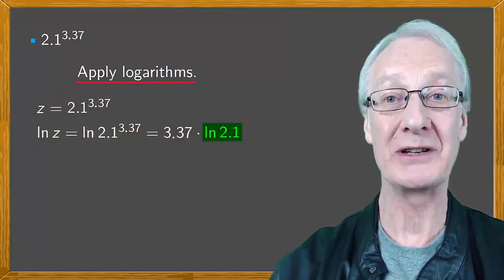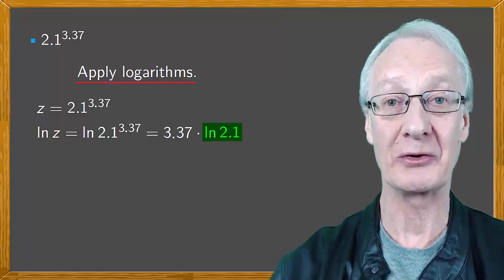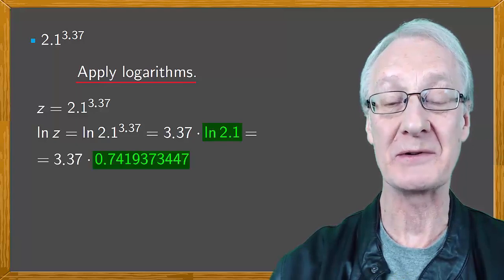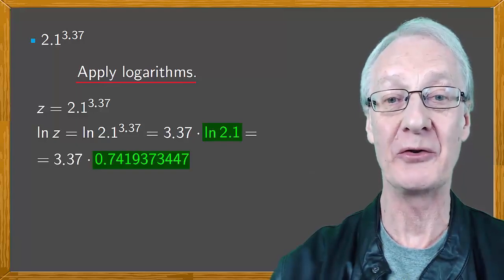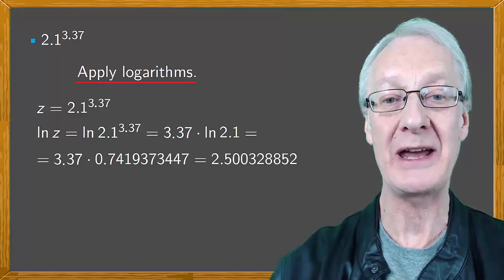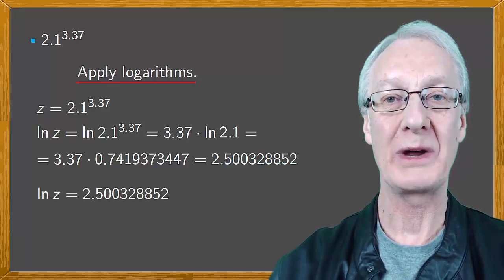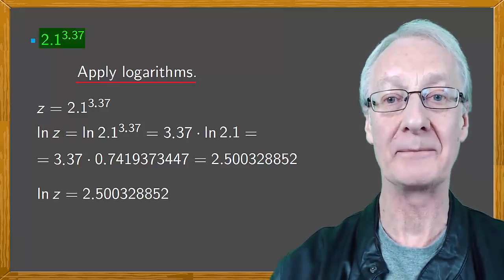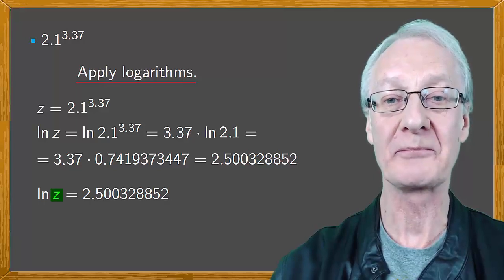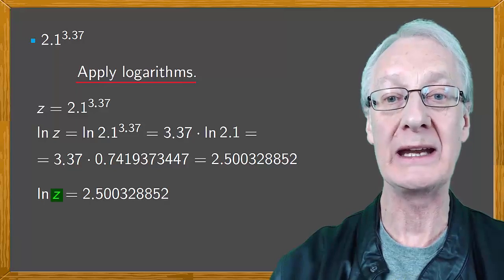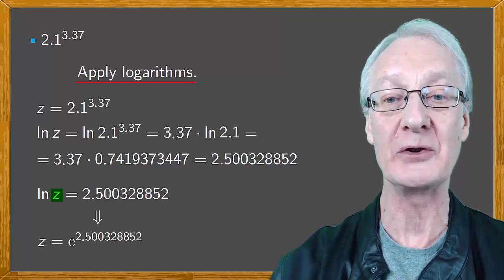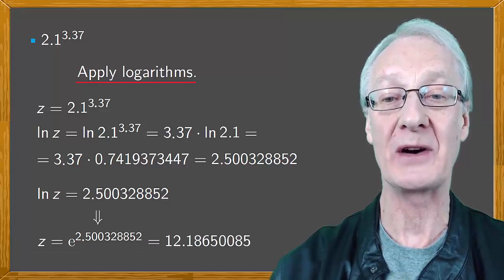Having said that, we are going to allow ourselves to use a calculator to give us the value of the logarithm that we need. So we'll key in 3.37 times the natural log of 2.1, which is 0.7419373447, and we get the product as 2.500328852. There we have the natural log of Z, but we want to get the power, which is Z. So we have to apply the exponential, which is the inverse function of the log. As we're dealing with the natural log, we need e to the x. So Z is e to the 2.500328852, which is 12.18650085.